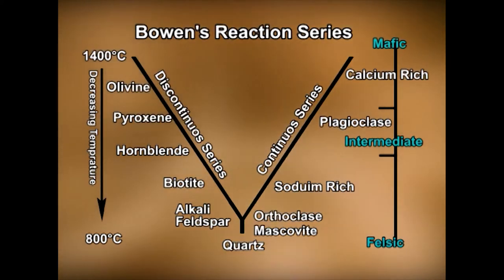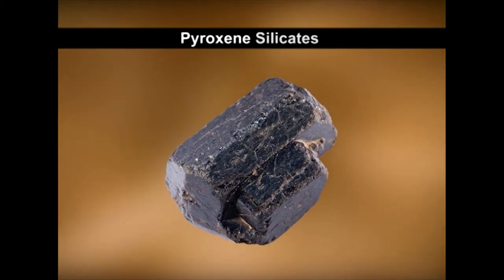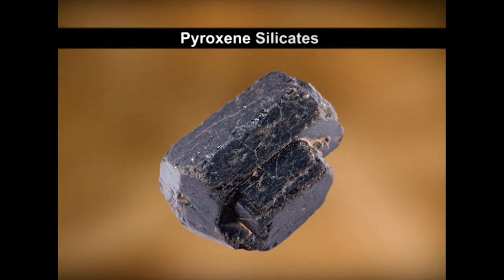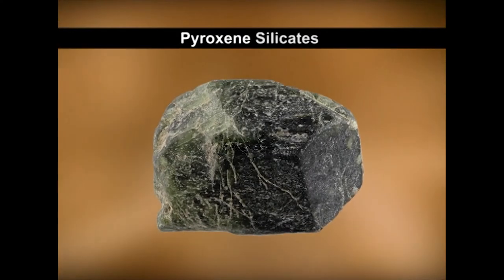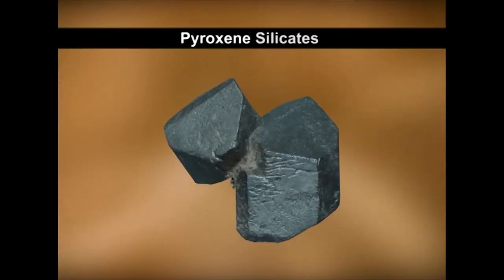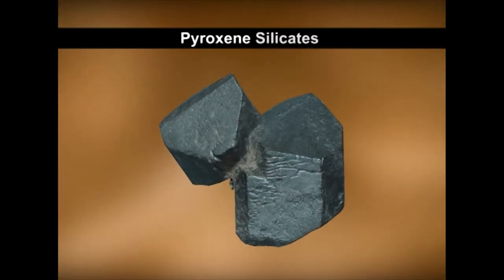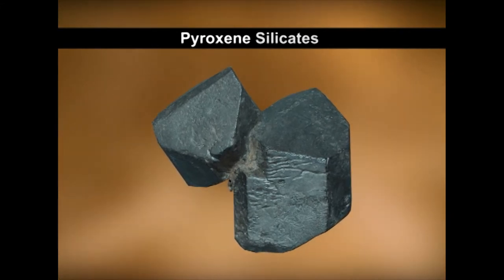Pyroxenes, the next family, is a large one with many types and subtypes. They are single chain structures, crystallized in orthorhombic and monoclinic systems. Augite is the typical representative — short prismatic, hardness 5 to 6, specific gravity 3.2 to 3.4, with two important prismatic cleavages on the eight-sided basal section intersecting nearly at 90 degrees. Other members are enstatite, hypersthene, and alkali pyroxenes. Ultra-basic and basic intermediate rocks including gabbros, basalts, and dolerite are home to this group.